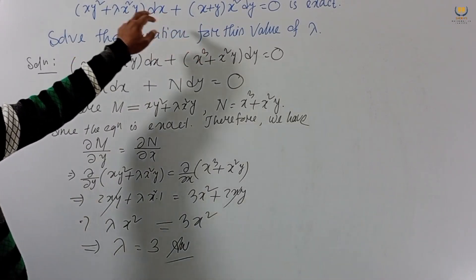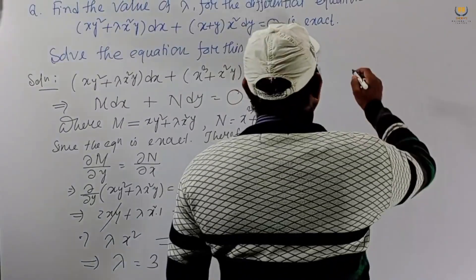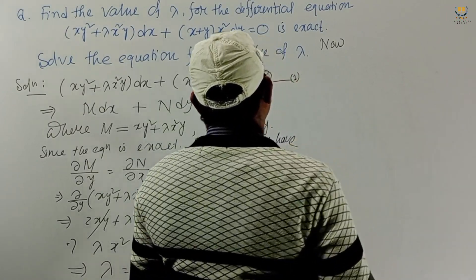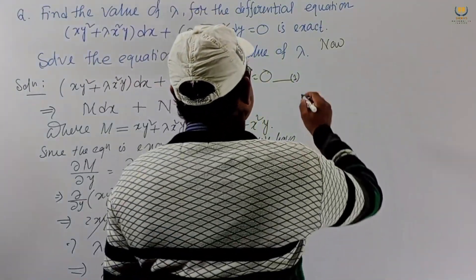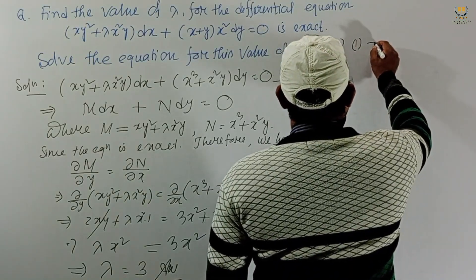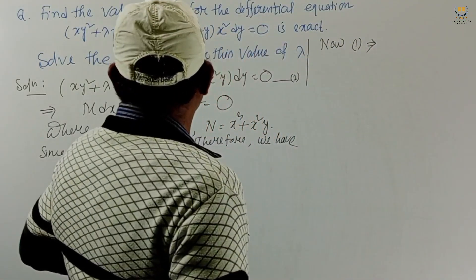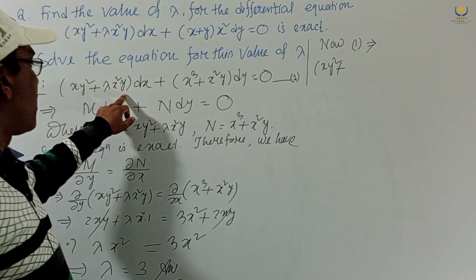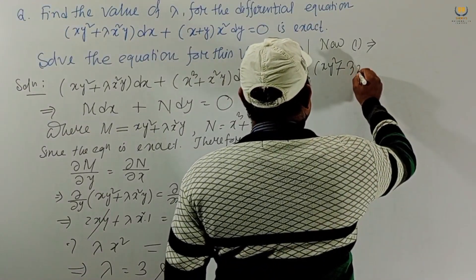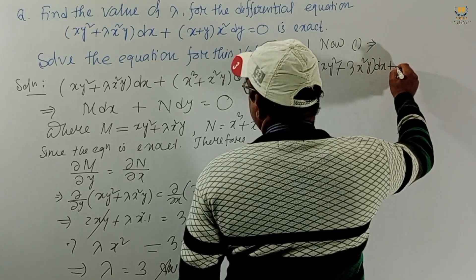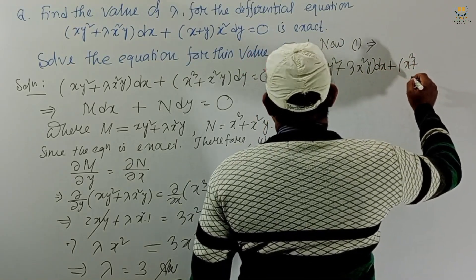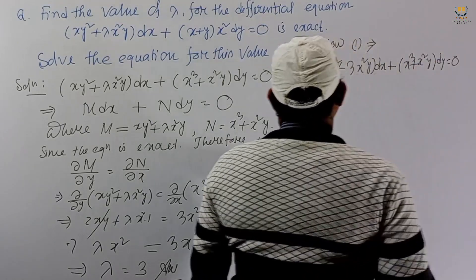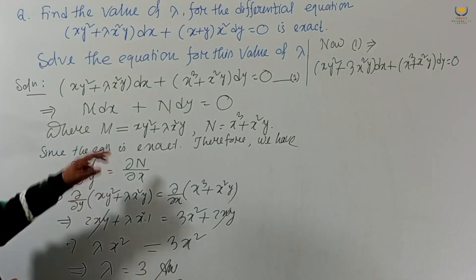Now solve the equation for this value of λ. Putting λ equals 3 into equation 1, we get (xy² plus 3x²y) dx plus (x³ plus x²y) dy equals 0.